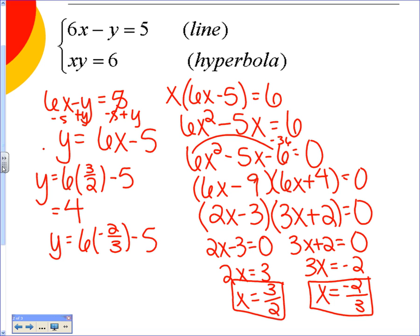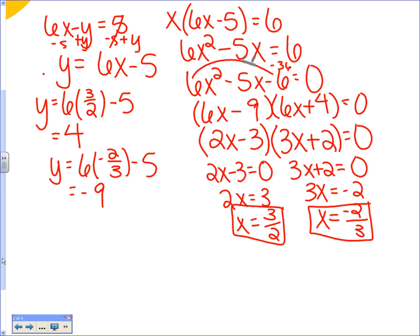Negative 5. What is 6 times negative 2 over 3? Negative 4. Negative 4 minus 5. Negative 9. So what do I do for my answer? 3 over 2, 4, negative 2 over 3, negative 9.